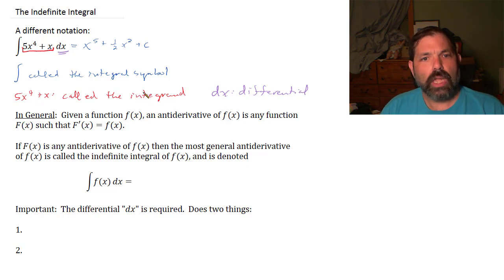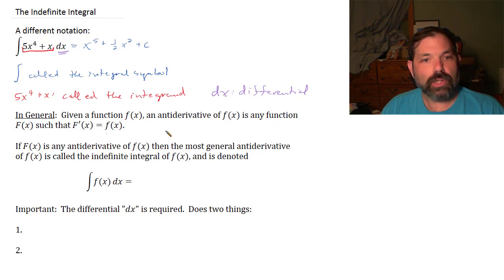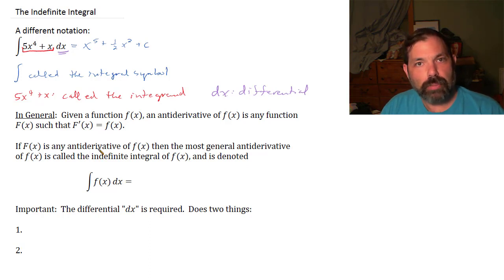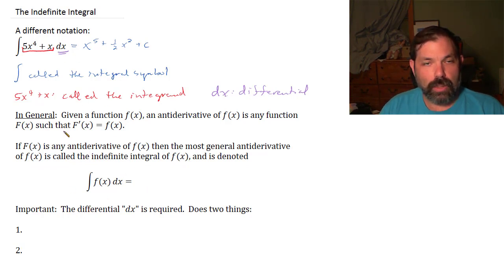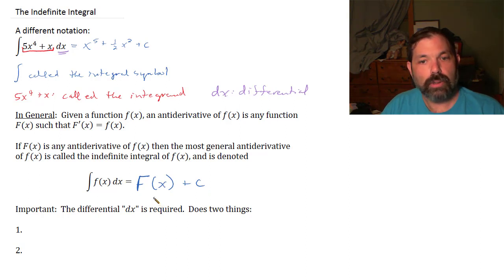In general, given some function f of x, an antiderivative of f of x is any function capital F of x such that F prime of x equals f of x — meaning if we take the derivative of capital F of x, we get back the integrand f of x. If capital F of x is any antiderivative of little f of x, then the most general antiderivative is called the indefinite integral, denoted as the integral of f of x dx equals capital F of x plus c.